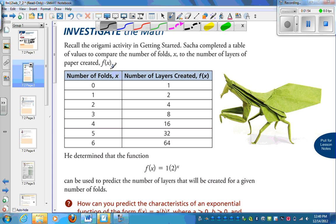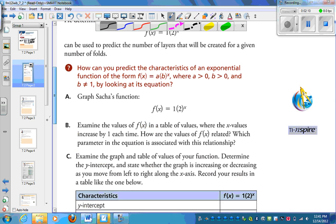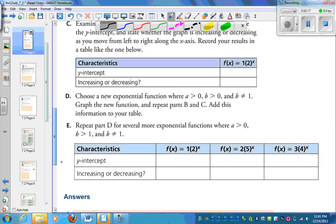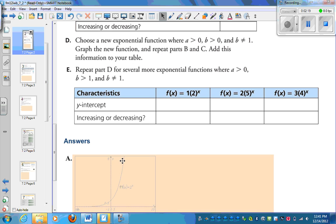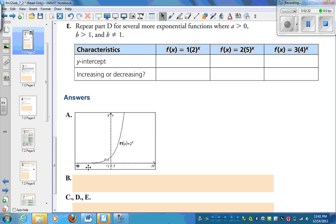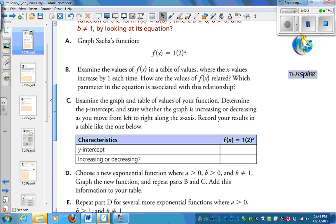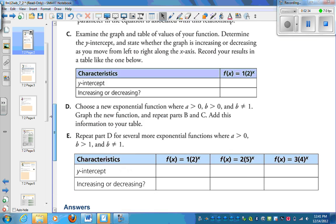Here's a table: the number of folds, the number of layers created. When we fold a piece of paper 0 times, we have one layer. When we fold it once, we have two layers. So this is an exponential function and its function is this. It can be used to predict the number of layers. Let's look at a couple things here. Graph this function. What that looks like graphed is down here. When we look at the graph, we see it looks something like that.